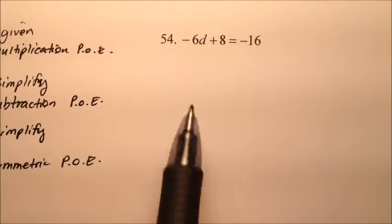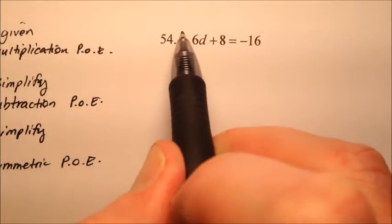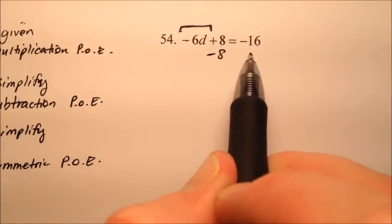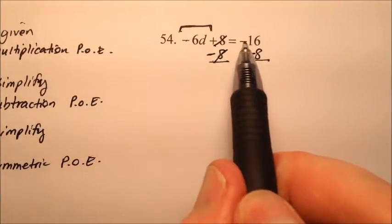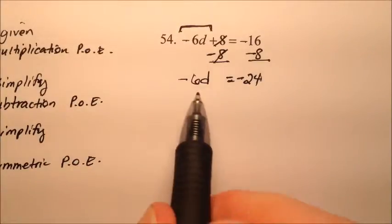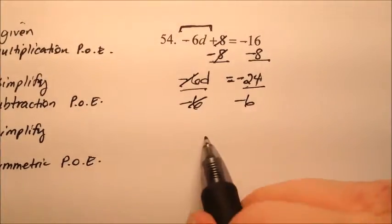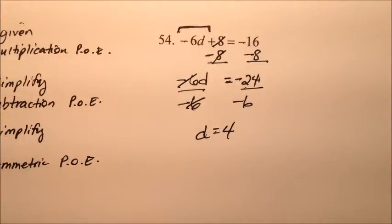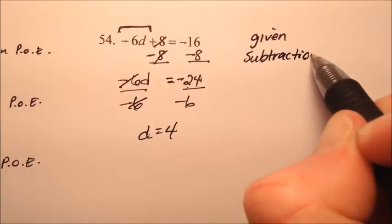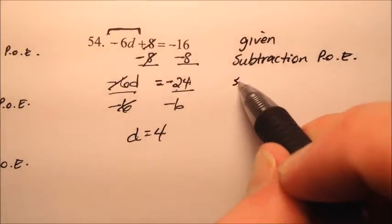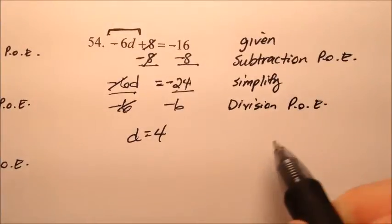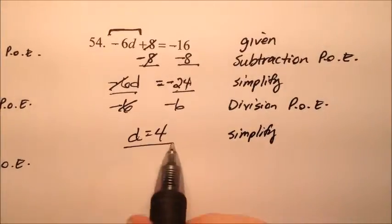Number 54 has negative 6d plus 8 equals negative 16. Similar to number 51, the variable d is in the term negative 6d, so subtract 8 from both sides to cancel the 8s. Negative 16 minus 8 is negative 24, giving negative 6d equals negative 24. Divide both sides by negative 6, and d equals 4. Steps: given, subtraction POE, simplify, division POE, simplify. Solution: d equals 4.